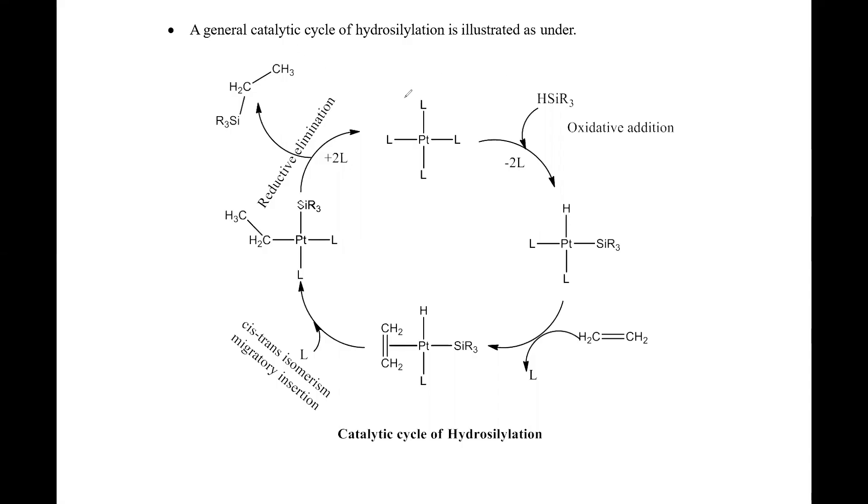With this diagram we can understand the catalytic cycle of hydrosilylation. Initially platinum complex, there's dissociation of ligands. Then in the first step the ligands coordinate, and this is oxidative addition of trialkyl hydrosilane. That is the oxidative addition process.